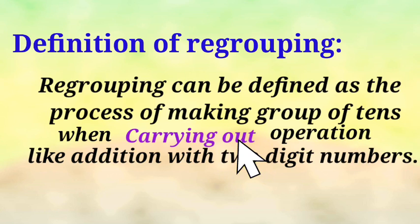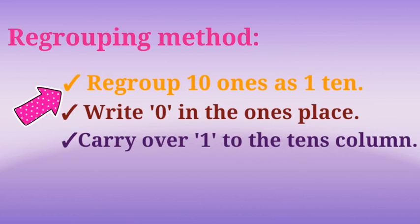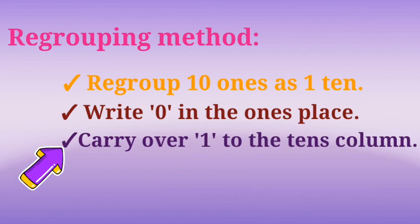Carry-out means adding the tens. Regrouping method: regroup ten ones as one ten. Write zero in the ones place. Carry over one to the tens column.